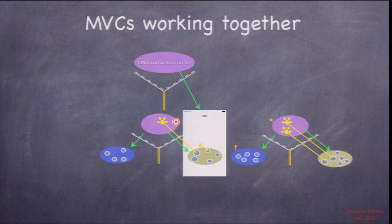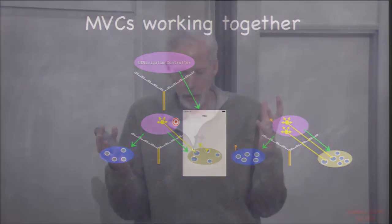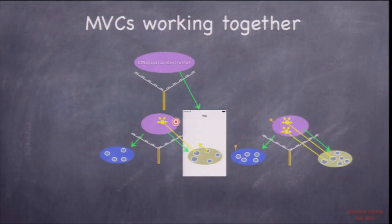Every time we push a new thing onto a navigation controller, we're creating a new one from the storyboard. Every time we go back and it disappears, it's deallocated. So these MVCs need to know how to come to life, be prepared to come on screen, do what they do, save their work, and go away. Some people will be confused — wondering what happened to all their data when they go back. The answer is it got deallocated. If any data needs to stay, you need to save it somewhere, communicating back with blind structured communication — though you won't have to do that for this assignment.